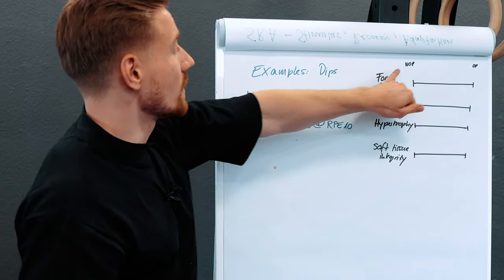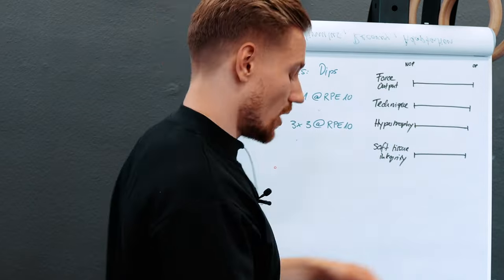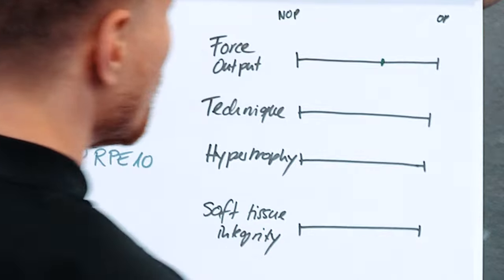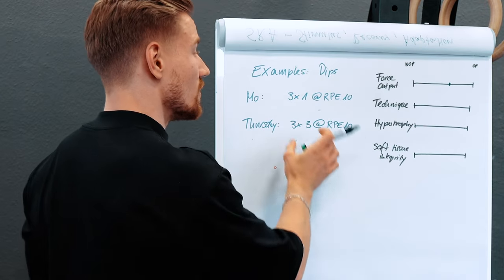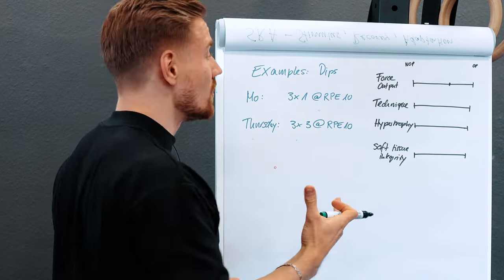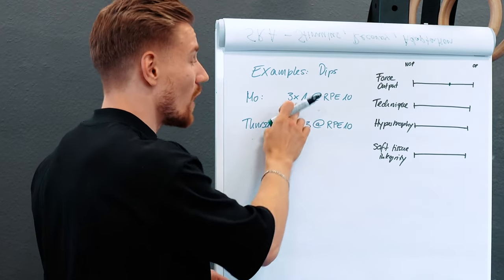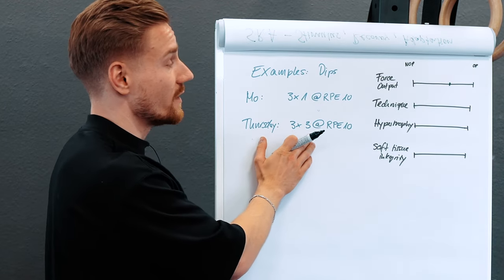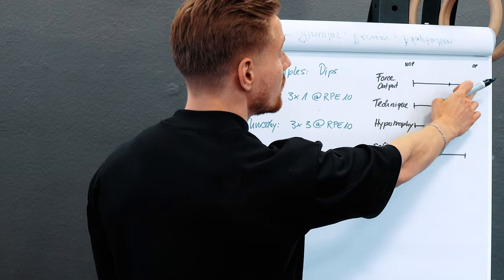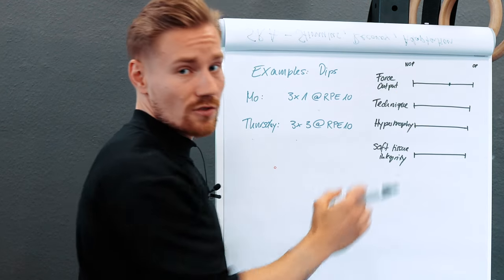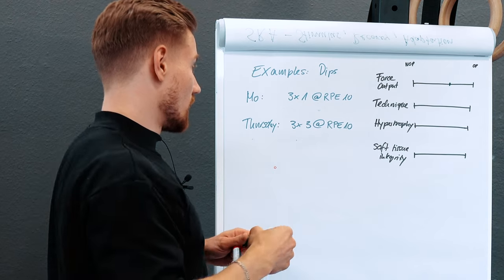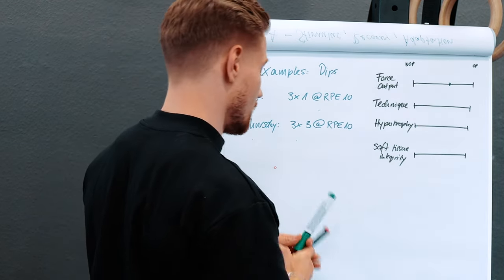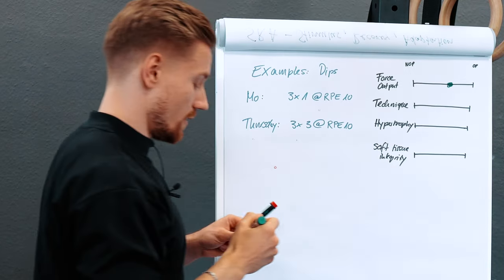Looking at the 'not optimal' to 'optimal' scale for force output, this program is probably a bit more towards optimal — we're providing a good stimulus and training it twice a week — but it may be too early for that second heavy session, so we're definitely not fully optimal but also not in the 'not optimal' range. Training specific and heavy is good.